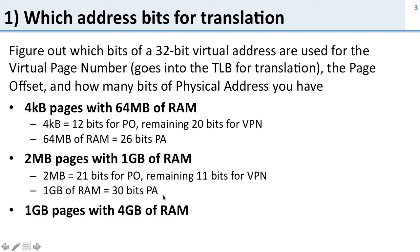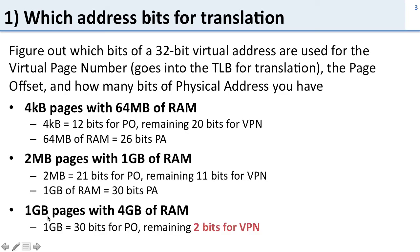For one gigabyte of RAM we need 30 bits of physical address. If we have one gigabyte pages then we need 30 bits for the page offset, which means we only have two bits for the virtual page number — so we only have four pages total for a 32-bit application. If we have four gigabytes of RAM we have 32 bits of physical address space.